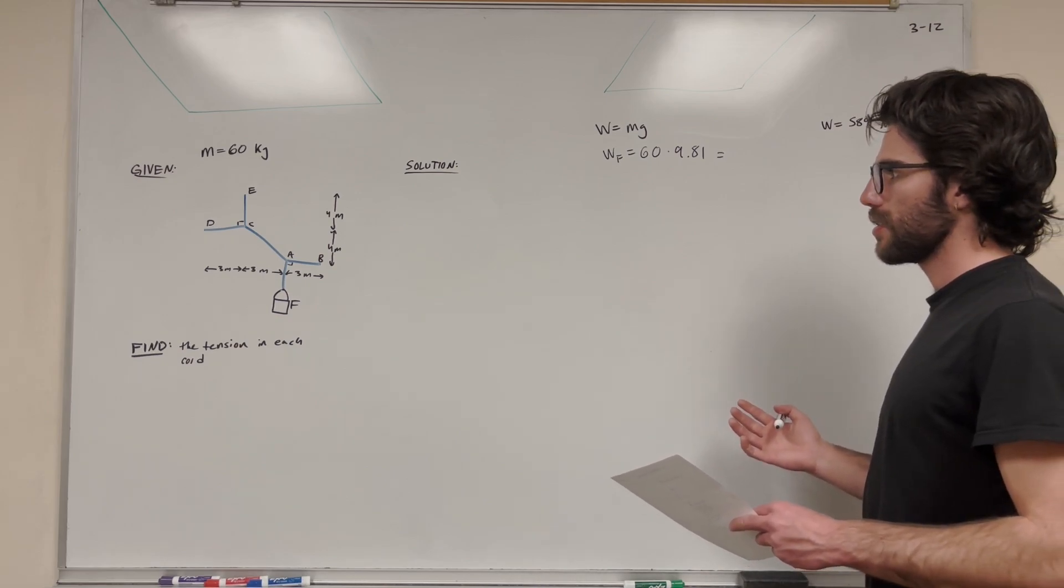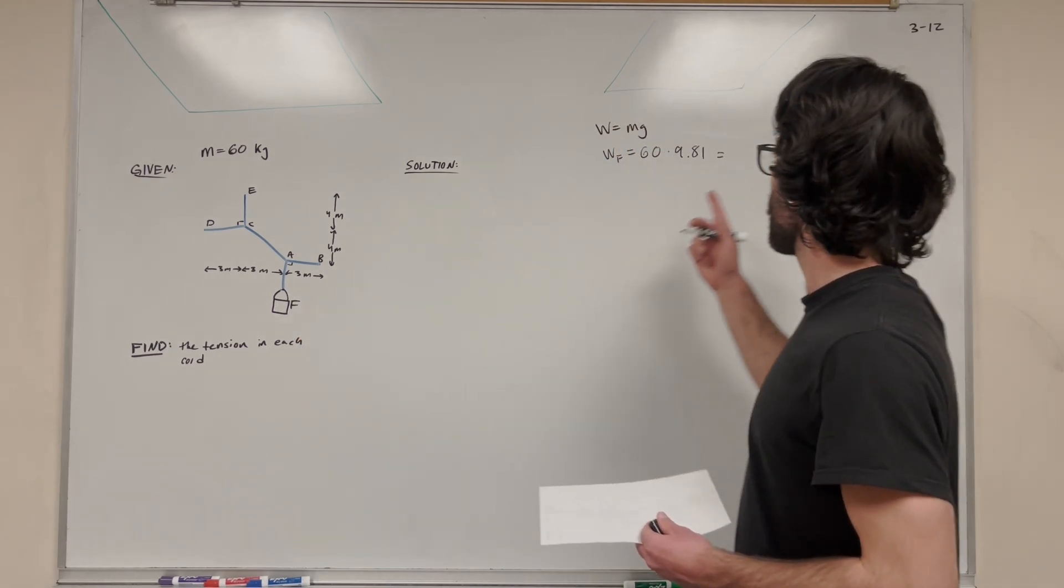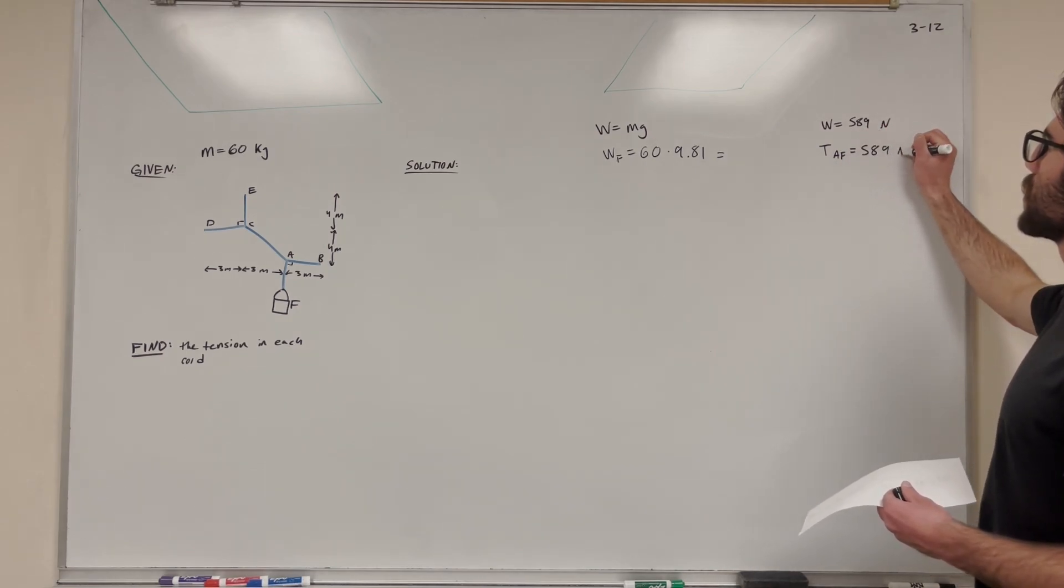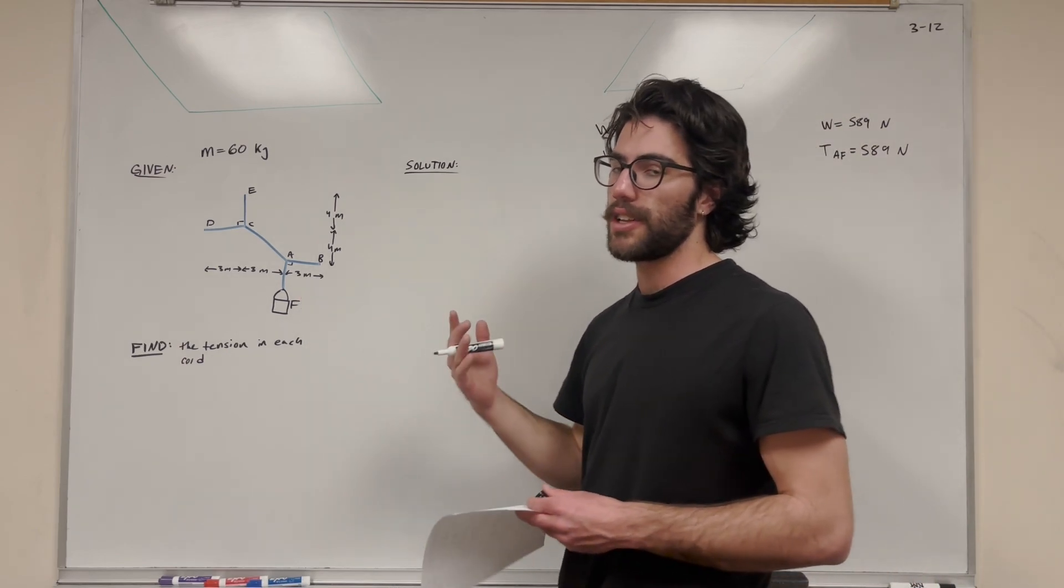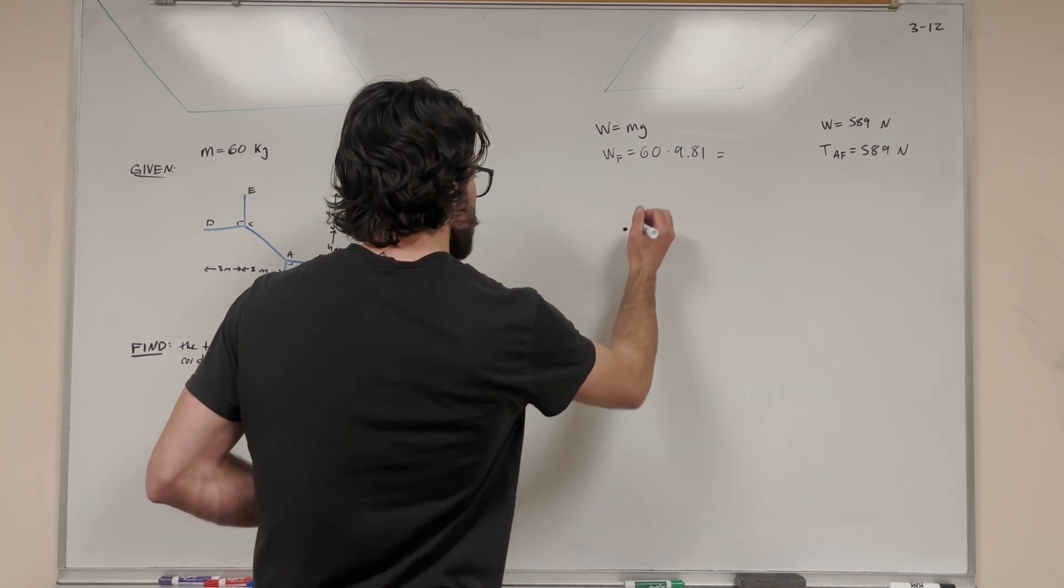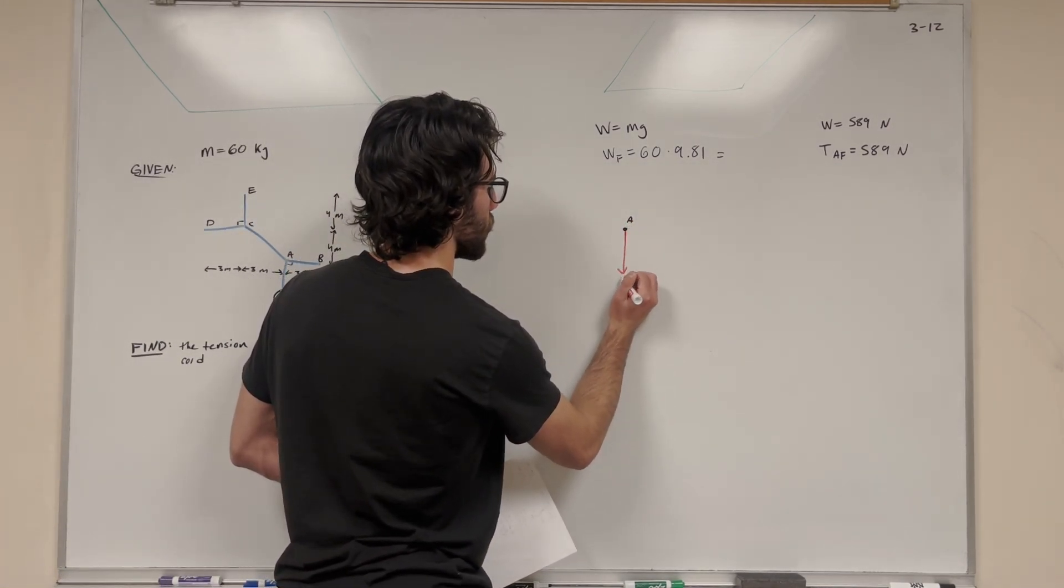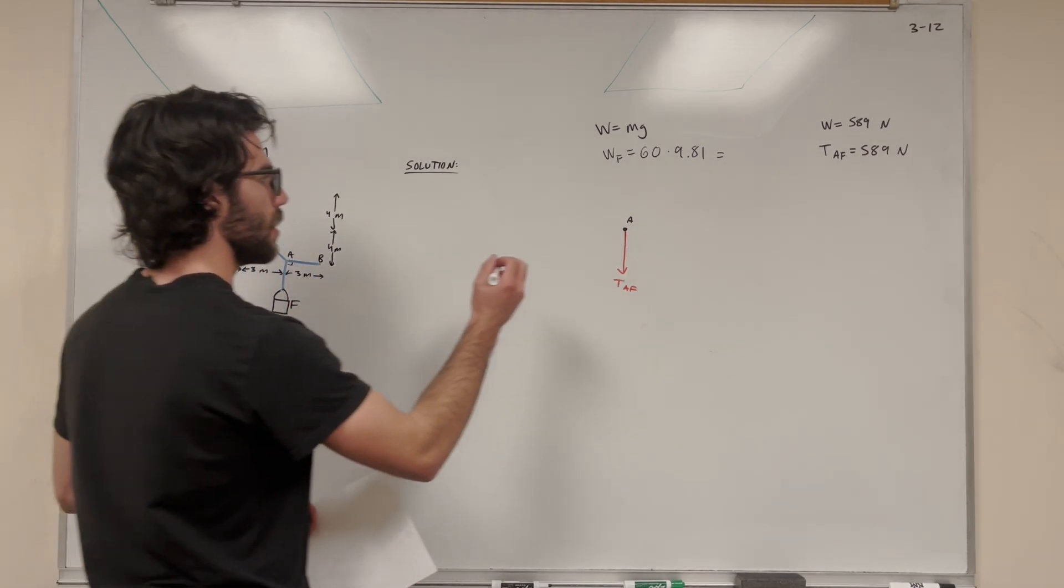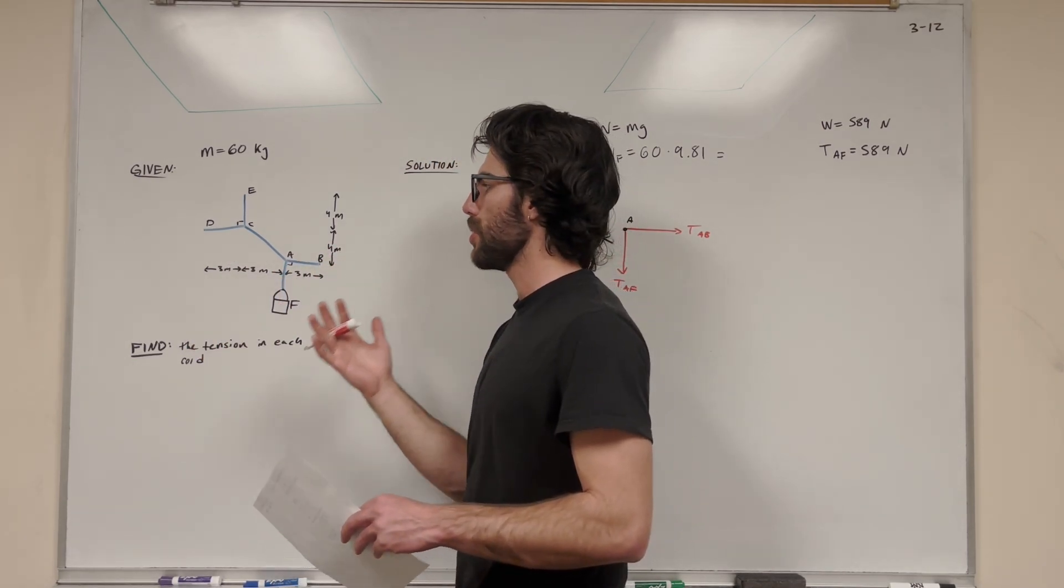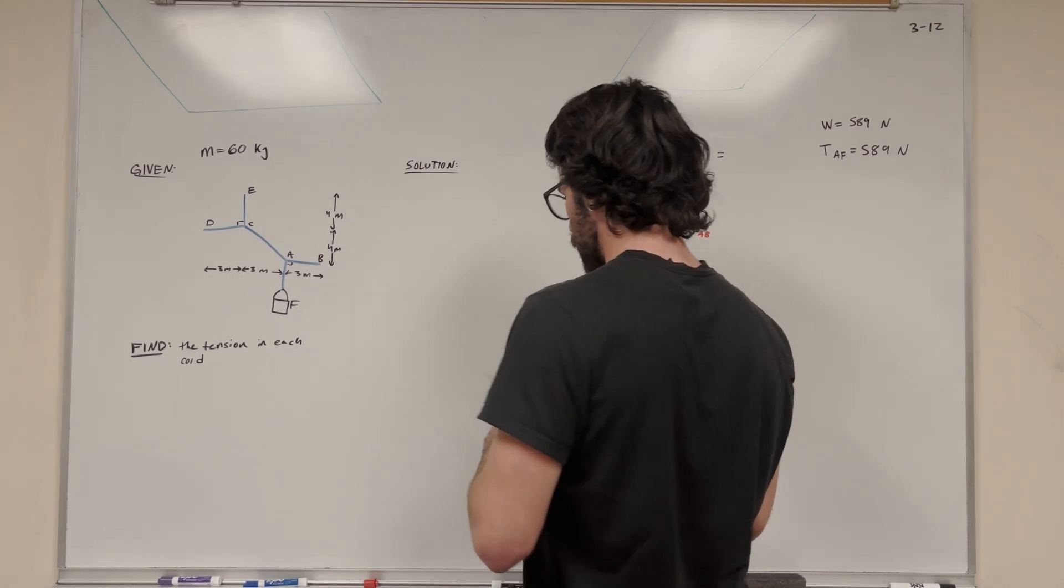So let's go ahead and draw a force body diagram. Let's start at A, like I said. Because we know that the weight of F is 589 newtons, we know that that tension AF is equal to 589 newtons. And if you want to prove that to yourself, draw a free body diagram at point F. So let's go ahead and draw a free body diagram. So there is point A. I'll label the forces. Here is tension AF, here AB. AB is going to pull straight to the right. We're drawing these arrows pointing away from A because tension only pulls. It doesn't push. And tension AC is going this direction.